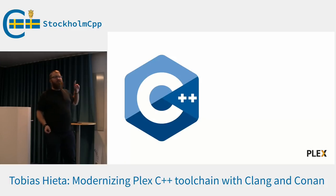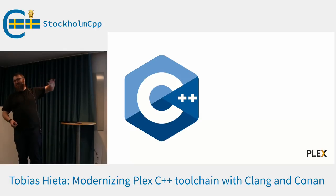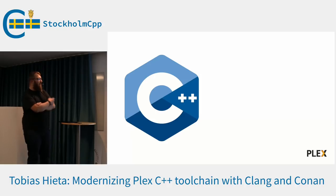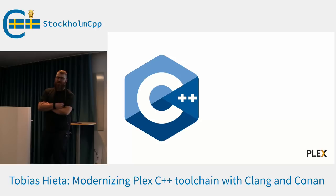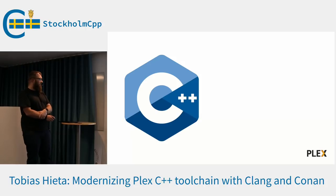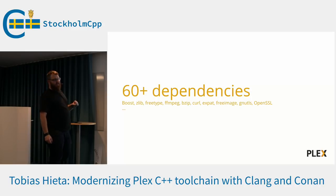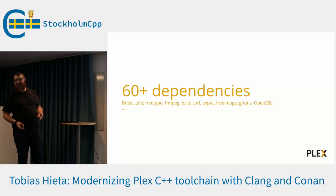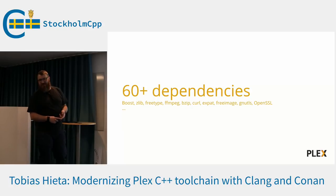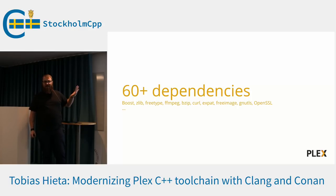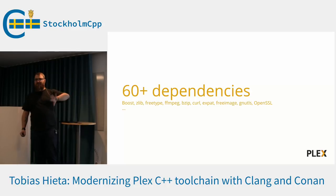When he started working on this 10 years ago, there was no fancy C++. There was just basic C++98. C++ is a wonderful language but also has some really sharp edges. We don't want to reinvent the wheel — we shouldn't write our own SSL library, we don't want to write our own image processor. So the Plex Media Server has accrued quite a lot of dependencies. By now we're over 60 of them — open source libraries that we depend on.